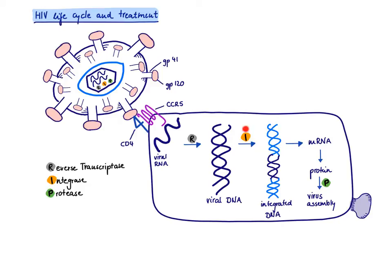Another enzyme called integrase, also provided by the virus, ensures that the viral DNA gets integrated into the host DNA. The virus then uses the host machinery — host polymerases to make mRNA and host ribosomes to make proteins. Finally, a protease cuts the proteins off the string so they can be assembled, and the virus buds off the cell. The three enzymes the virus brings can be remembered with 'RIP': Reverse transcriptase, Integrase, and Protease.